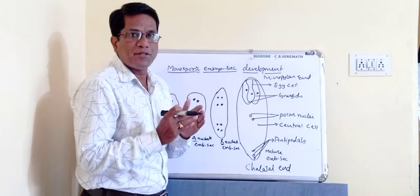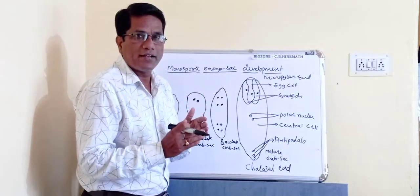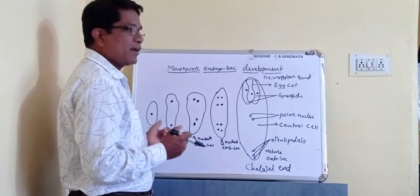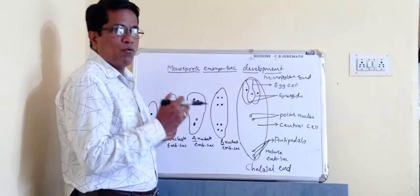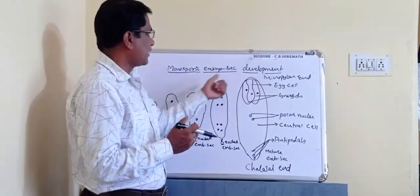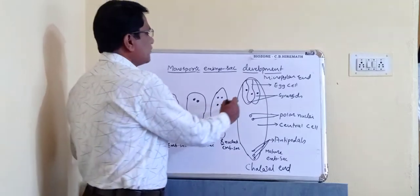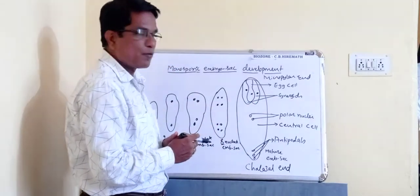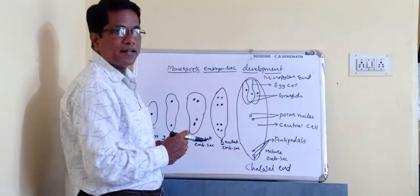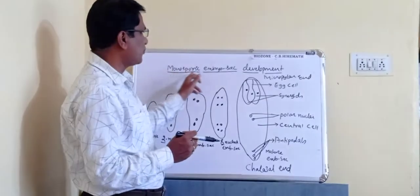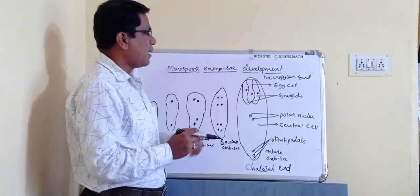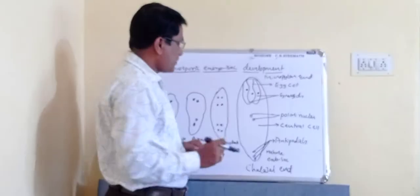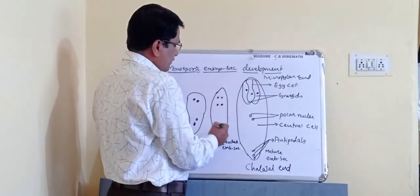This mature embryo sac — the female gametophyte — is developed from the megaspore. It is called monosporic embryo sac development because this seven-celled, eight-nucleated embryo sac is developed from a single cell, the megaspore.